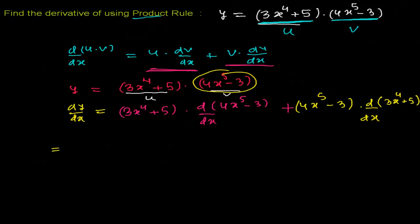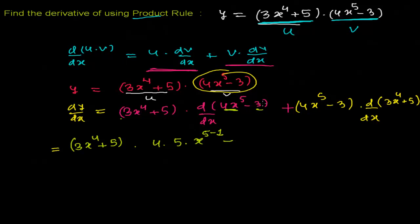Now let's solve. I'm going to write the first function (3x⁴ + 5) as it is. Now I need to find the derivative of (4x⁵ - 3). Since 4 is a constant coefficient, I write 4 as it is, and applying the power rule to x⁵: bring the power down, so 5 times x to the power of 4. Then minus the derivative of 3, which is a constant, so its derivative is 0.